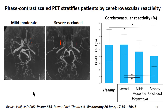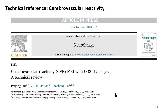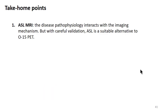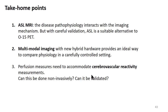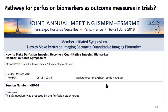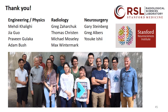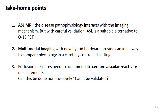Don't just validate at baseline — please validate in multiple conditions. Peng Ying Liu's review paper published last year covers how to do CVR. Take-home points: ASL is challenging with disease pathophysiology, but as shown with the Moyamoya case, it can be made a suitable alternative through multimodal imaging. Please ensure your perfusion measurements accommodate cerebrovascular reactivity, and we need more studies to validate CVR as a clinical biomarker. There is a member-initiated symposium on DSC and ASL discussing how to make perfusion more quantitative. Thank you especially to my mentor Greg Zaharchuk and our whole group.